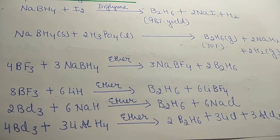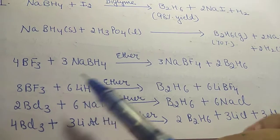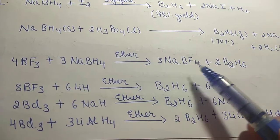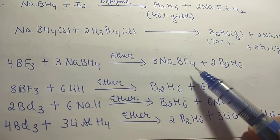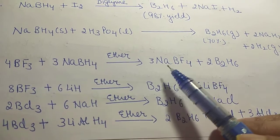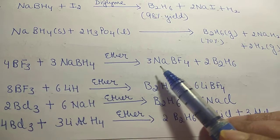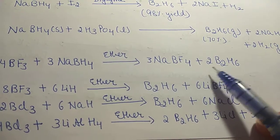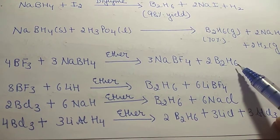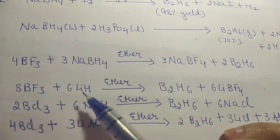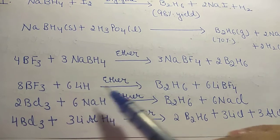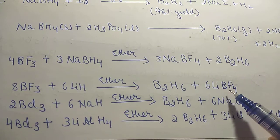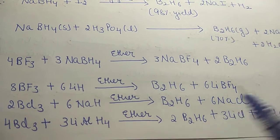The next method: BF3 plus NaBH4 in the presence of ether gives sodium tetrafluoroborate plus B2H6 as one of the products. Then BF3 when treated with lithium hydride in the presence of ether gives B2H6 diborane plus LiBF4.